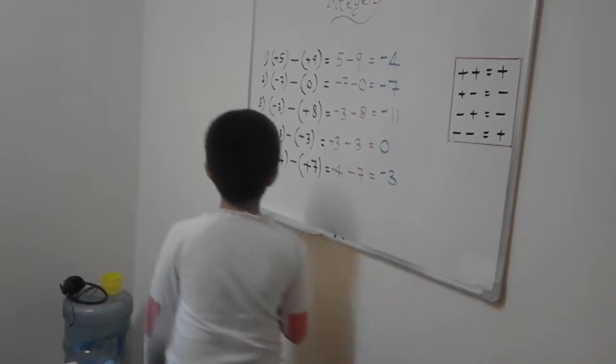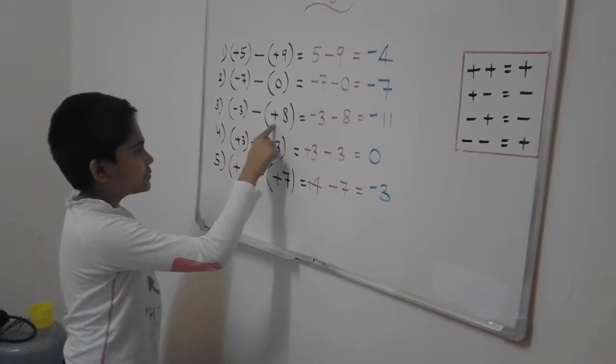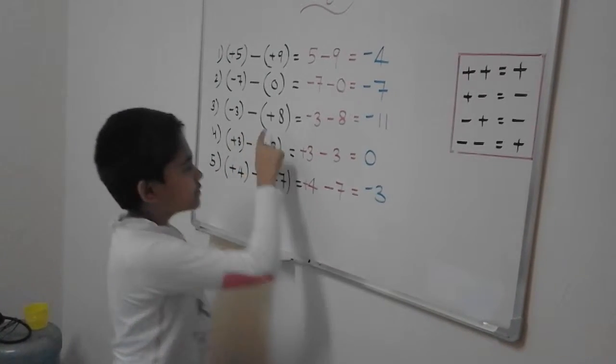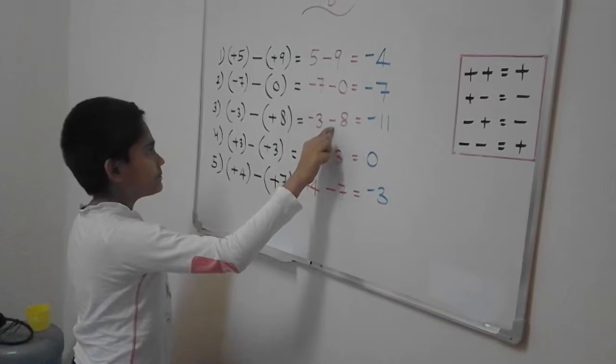The question is negative 3 minus plus 8. Then the inner rule, it is written minus plus is equal to minus. So it will become minus.